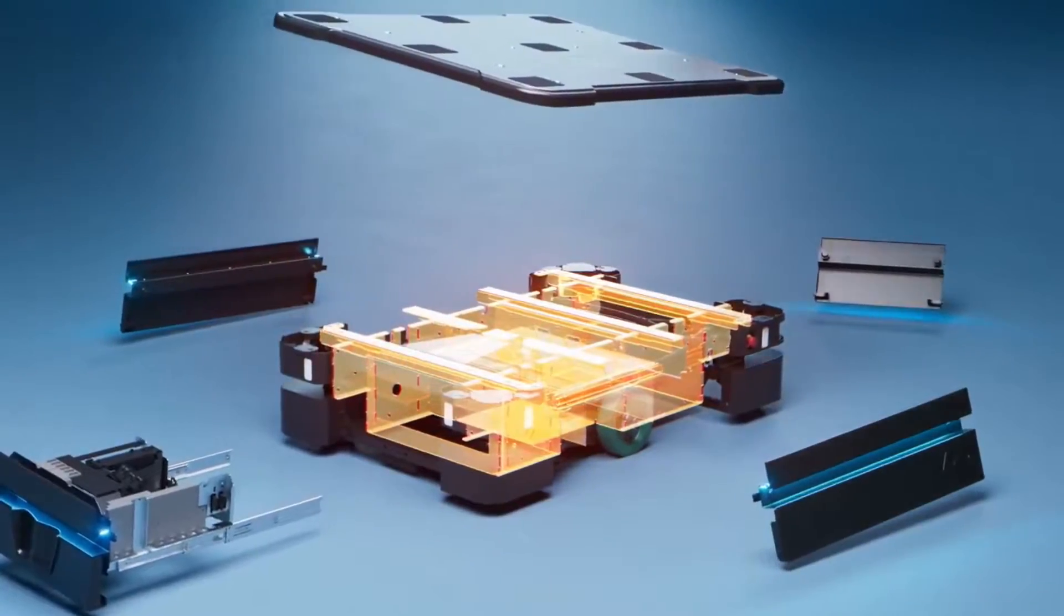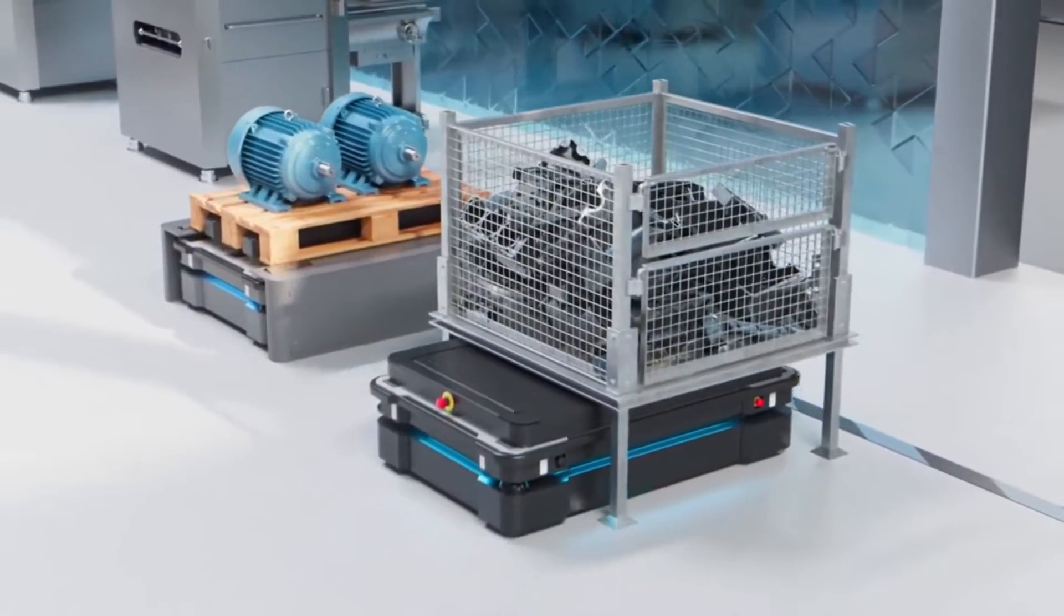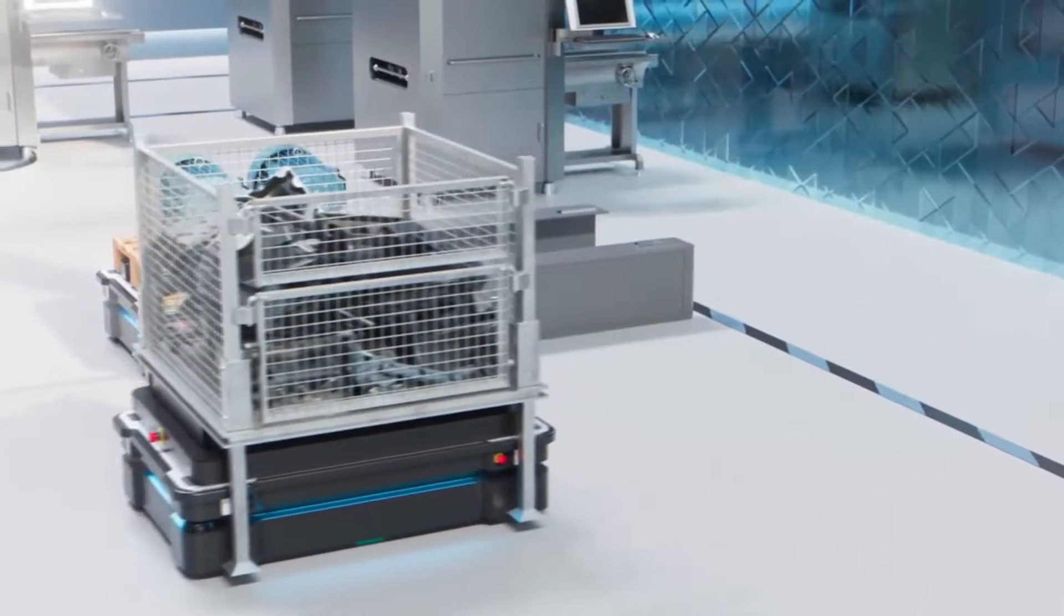The MiR 600 and MiR 1350 offer payloads weighing up to 600 kilos, and the MiR 1350 can transport payloads up to an astonishing 1,350 kilos.